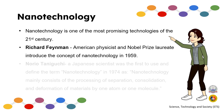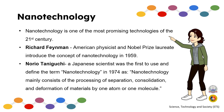After 15 years, Norio Taniguchi, a Japanese scientist, was the first to use and define the term 'nanotechnology' in 1974. He defined it as mainly consisting of the processing of separation, consolidation, and the formation of materials by one atom or one molecule.